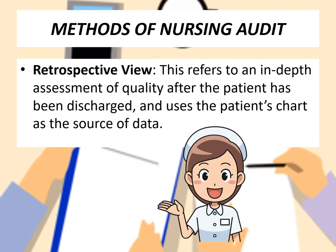We will see the different methods for nursing audit. The first method is called a retrospective review. In this method, an in-depth assessment of quality of nursing care is assessed once the patient is discharged, and it uses the patient's chart as the source of data. The existing records or nurses' documentation are reviewed for assessing the quality. That is called a retrospective review.